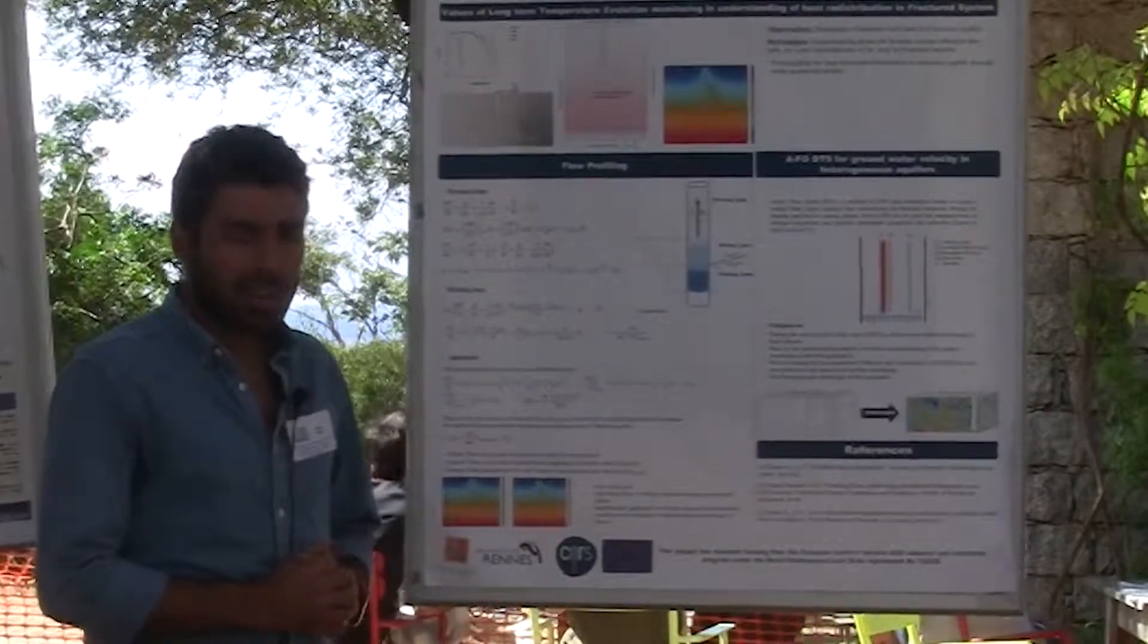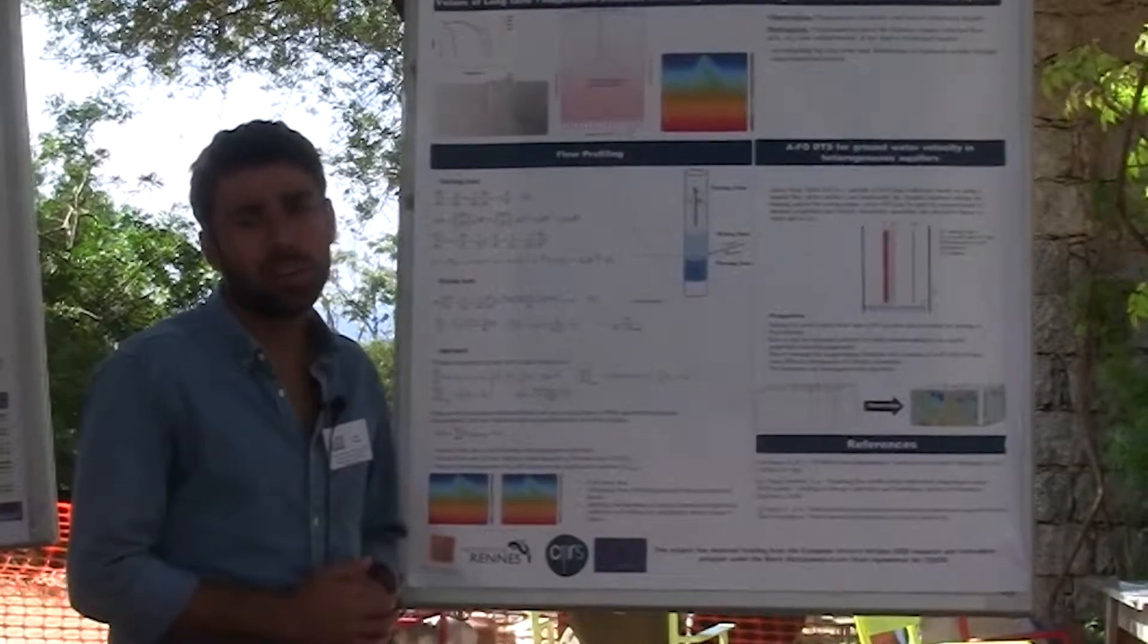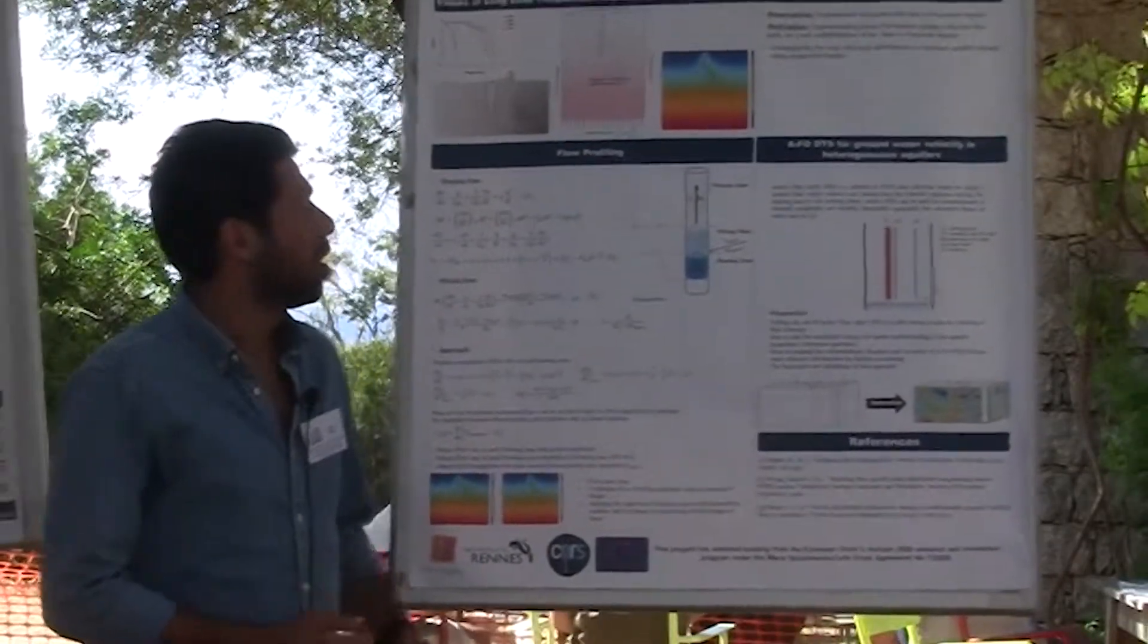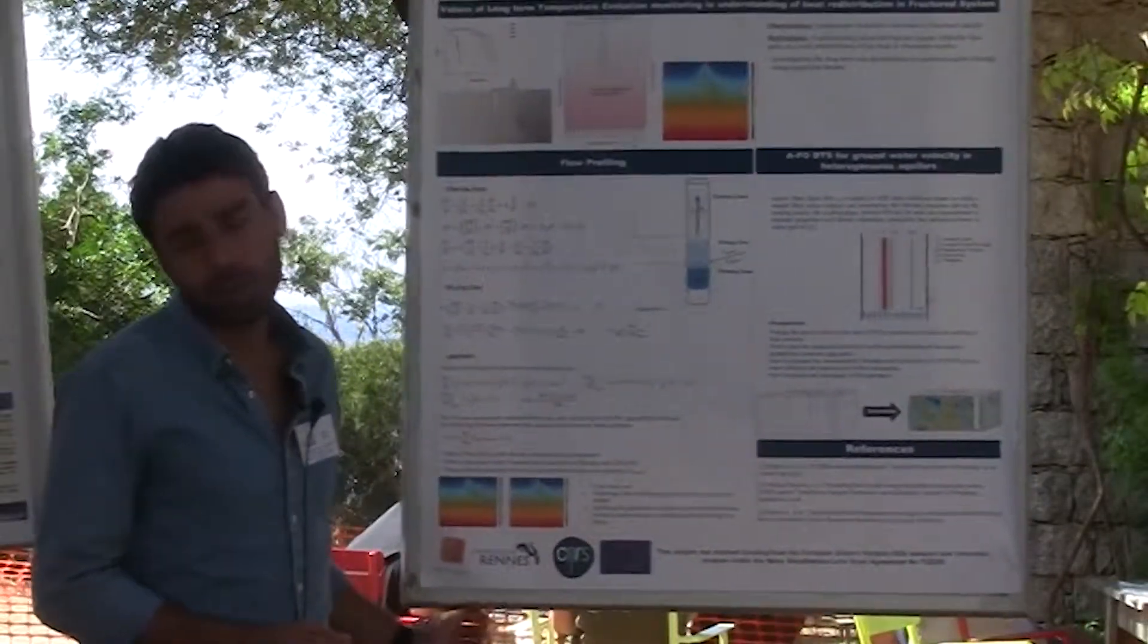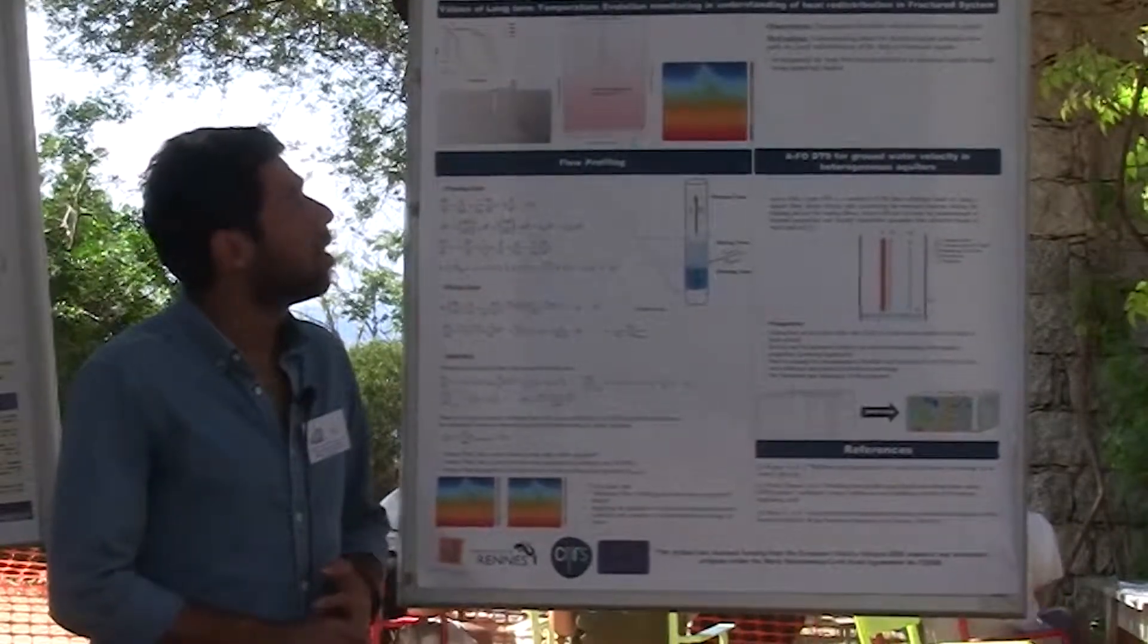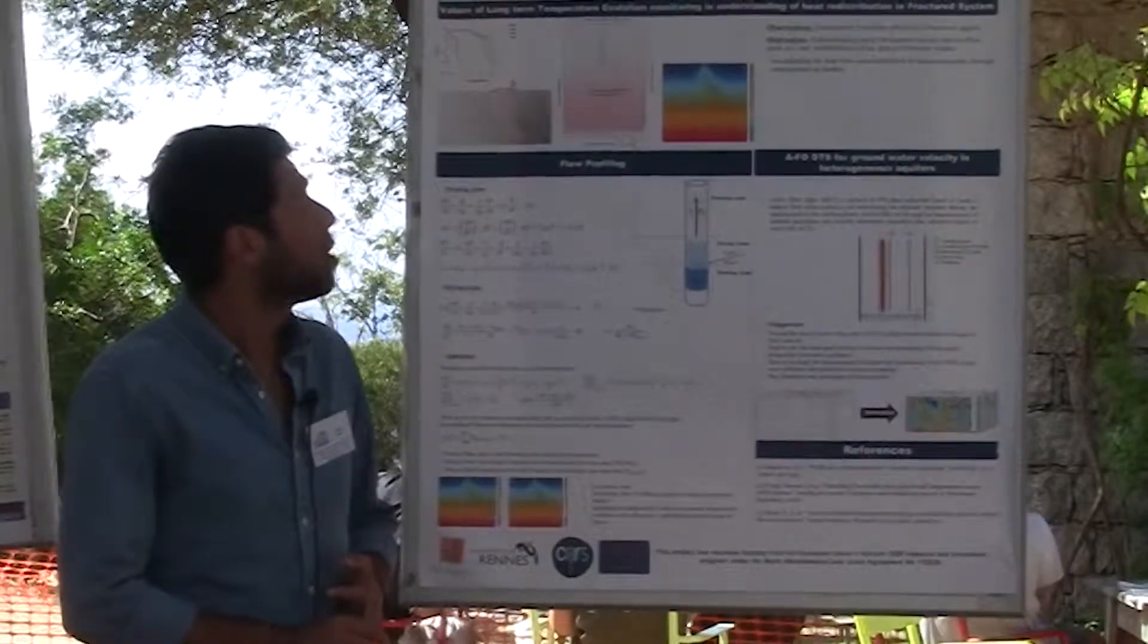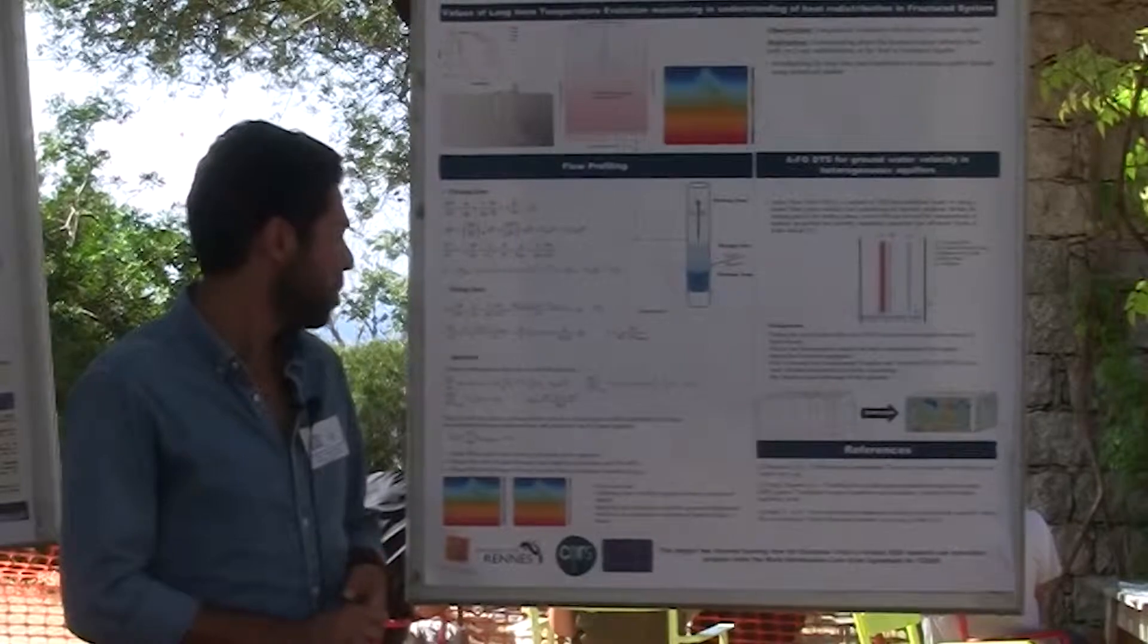Fiber Optic DTS is a tool that allows you to monitor the temperature all along the fiber optic in real time. It has found many applications especially in hydrogeology and management of hydrology systems.